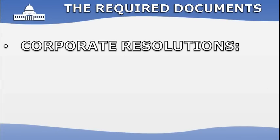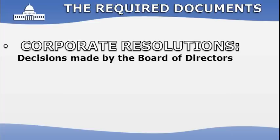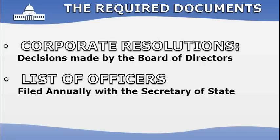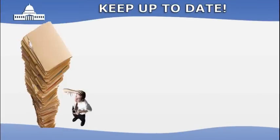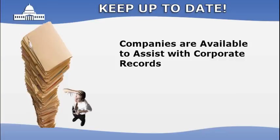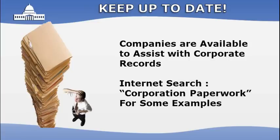Corporate Resolutions are written documents describing an action taken by the board of directors — for example, when a corporation issues a stock dividend. A List of Officers is filed annually with the Secretary of State, giving names and addresses of directors and certain officers. In a lawsuit, without proper corporate documents in place you could be held personally liable for the actions of the company. Keeping up-to-date corporate records is a legally required annual task. Many companies can assist with this — simply search 'corporation paperwork' on Google.